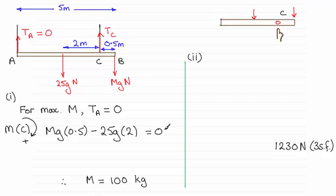So it's just a question then of solving this. I noticed that I could divide through by G. It's in every term there. So I could cancel the G out. And just rearranging this for M, you find that M would equal 50 here. 25 times 2, that would be 50. And I would divide that by 0.5, and that gives me 100. 100 kilograms then for M.